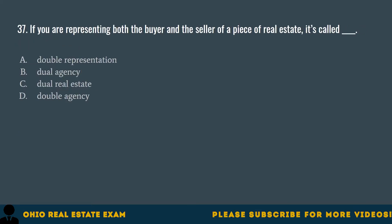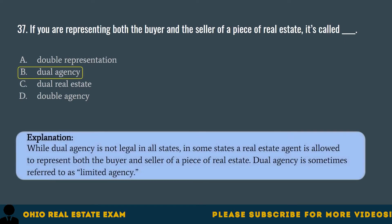Question 37. If you are representing both the buyer and seller of a piece of real estate, it's called... A. Double representation. B. Dual agency. C. Dual real estate. D. Double agency. The correct answer is B. Dual agency. While dual agency is not legal in all states, in some states a real estate agent is allowed to represent both the buyer and seller. Dual agency is sometimes referred to as limited agency.